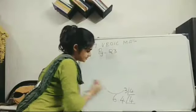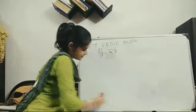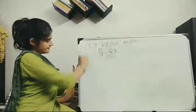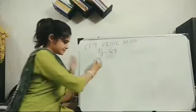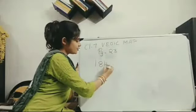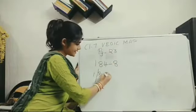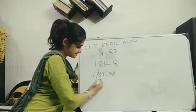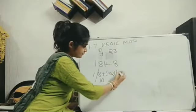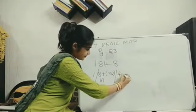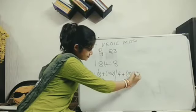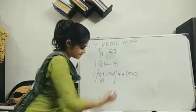I hope the pattern is clear. You just need to use the complement of 8. Last one. 184 divided by 8. So 1 comes down. Now 8 plus 1 into 2. That means 10. Now 4 is there. So 4 plus 10 into 2. That means 24.